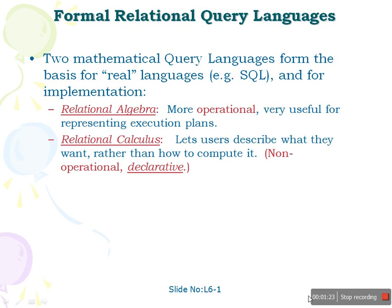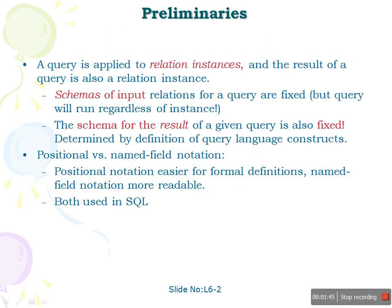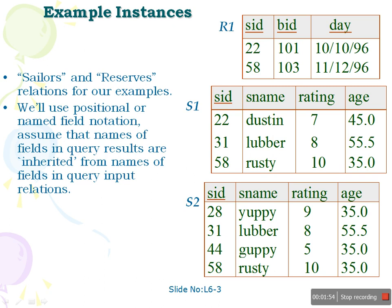Now we will discuss in detail what relational algebra and relational calculus are. In relational algebra, we will be discussing by taking some sample schema instances. I have taken two tables with duplicates — that is, Sailors and Reserves — with two schema instances each, and we'll see how relational algebra is used to retrieve or frame a query.